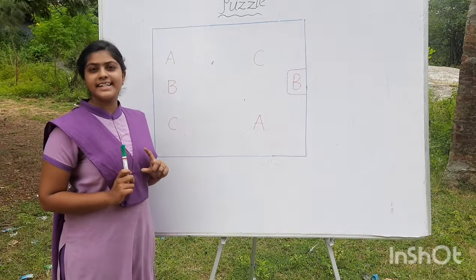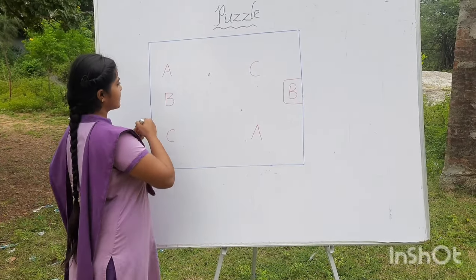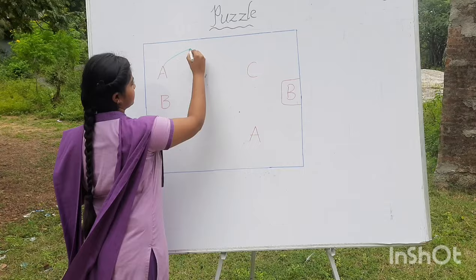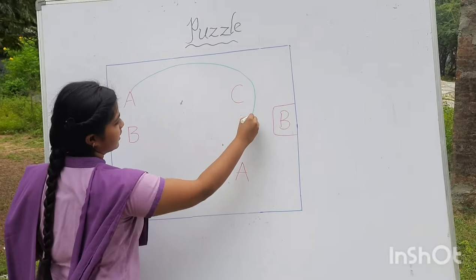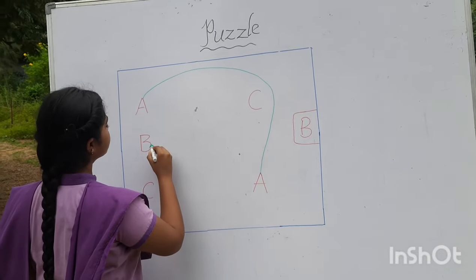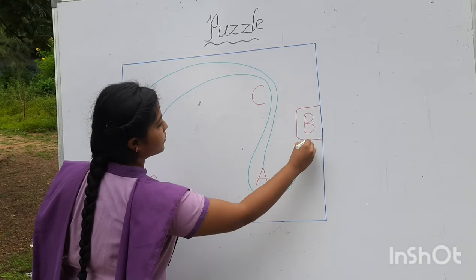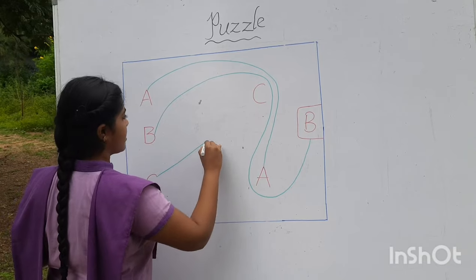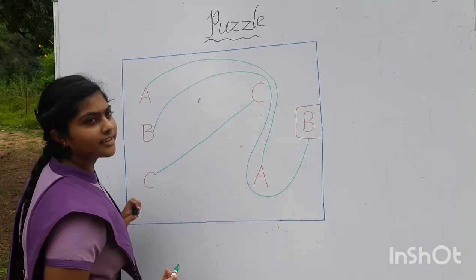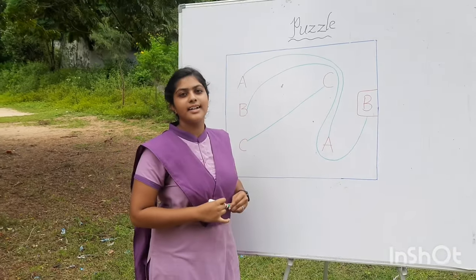Okay, now let's try the correct answer. A to A, B to B and C to C. I hope you enjoyed this puzzle and thank you.